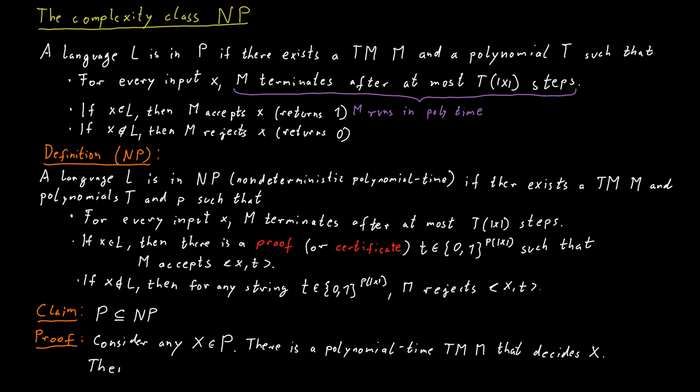So now we can also have a polynomial time certifier or verifier for this language X. What that verifier would simply do, it would ignore any kind of potential certificate string T that it gets, and just run this polynomial time Turing machine M on input X. So the verifier here would just ignore any extra input it gets, this bit string T, and just check directly whether X is in the language or not. And this can be done in polynomial time. So this is very simple.